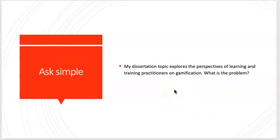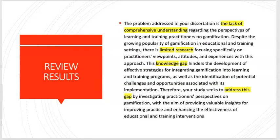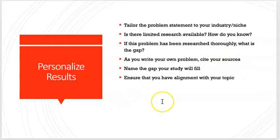Ask AI simple questions. Taking your topic, you can ask AI to help you with the problem statement, and AI will give you what it thinks is the problem. Now it's up to you to dissect what AI gives you and do the research. AI claims there's a lack of comprehensive understanding, there's limited research, there's a knowledge gap, and AI suggests how you might address this knowledge gap. You need to take those bits and pieces and tailor the problem statement to your industry or niche.